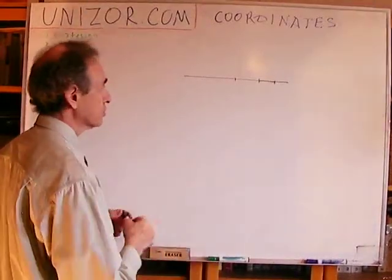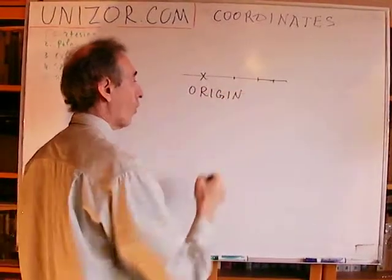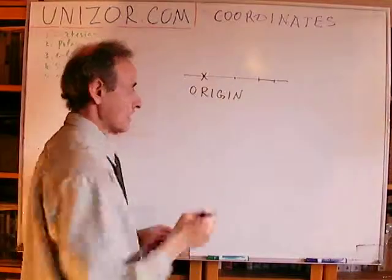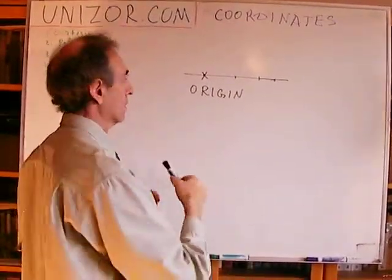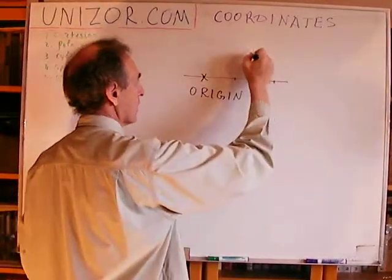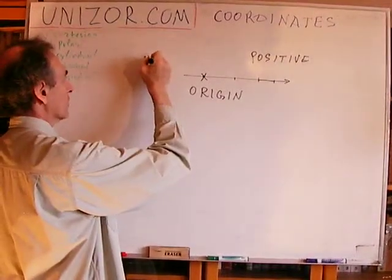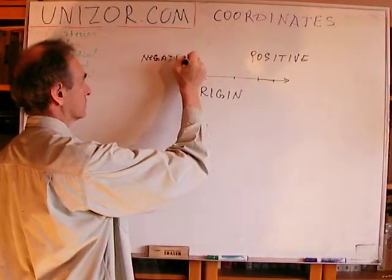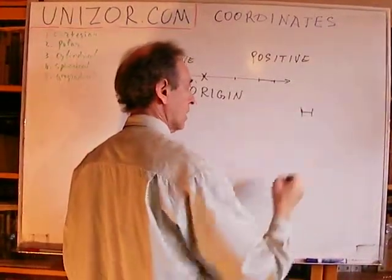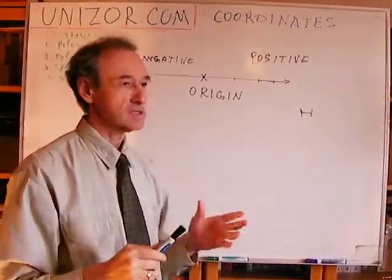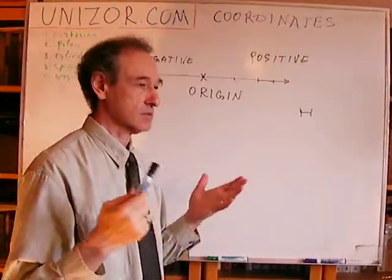What is a numerical characteristic of a point on the line? It's very simple. What you do is, number one, you choose one particular point on the line, which you call origin, or the beginning of a coordinate — also sometimes called a zero point. This point divides the line into two pieces: one side is called the positive direction, usually signified by an arrow, and the other side is the negative direction. We also have to have a unit of measurement, some kind of segment, which signifies a segment of unit length — length equals one.